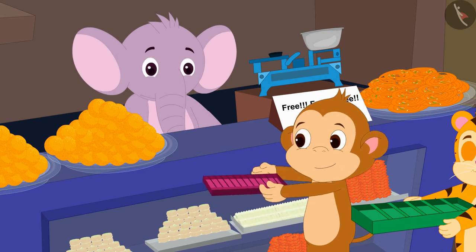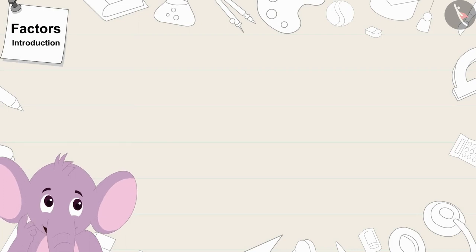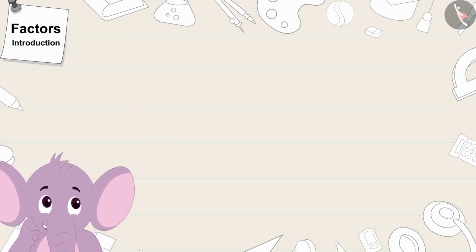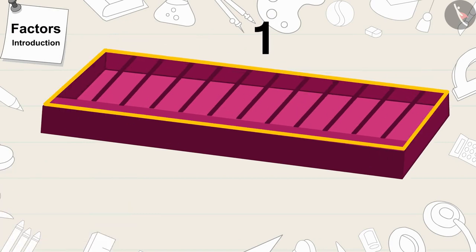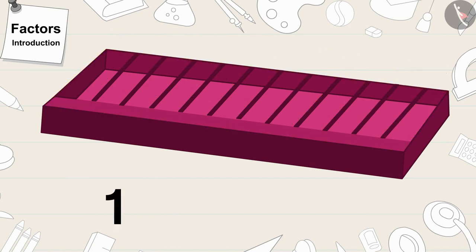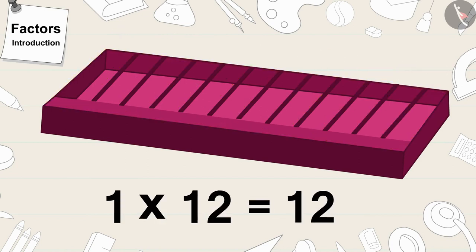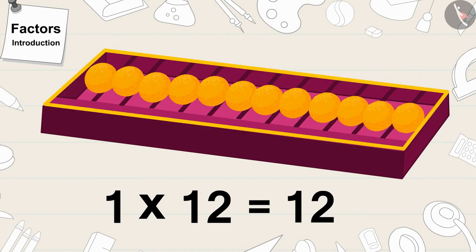Babban first gave his box to Appu. There are 12 slots in a line in Babban's box. Will 12 laddus fit in Babban's box? There is one line with 12 slots — that means 1 times 12. So 12 laddus will surely fit in Babban's box.